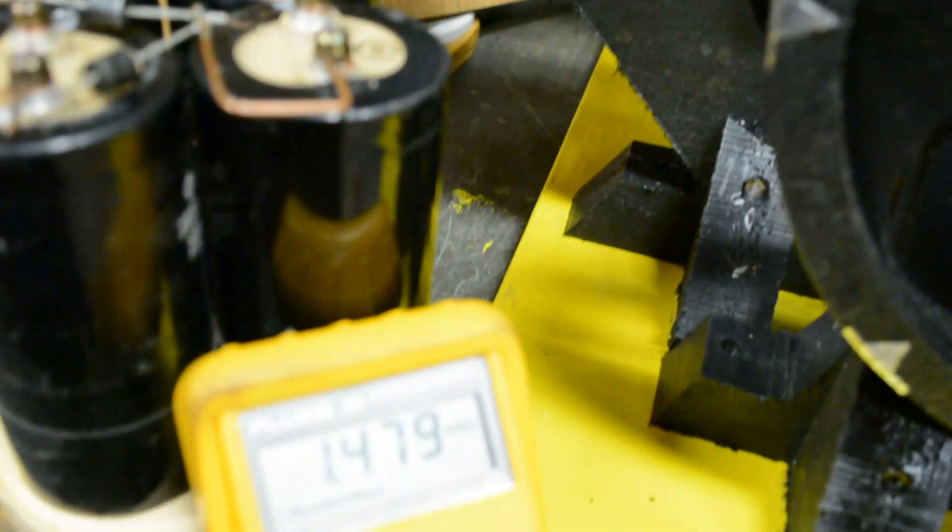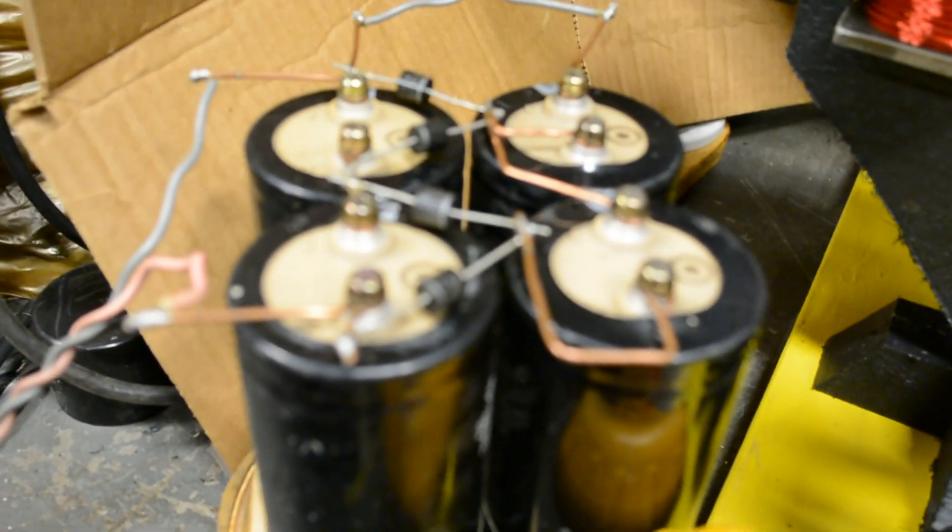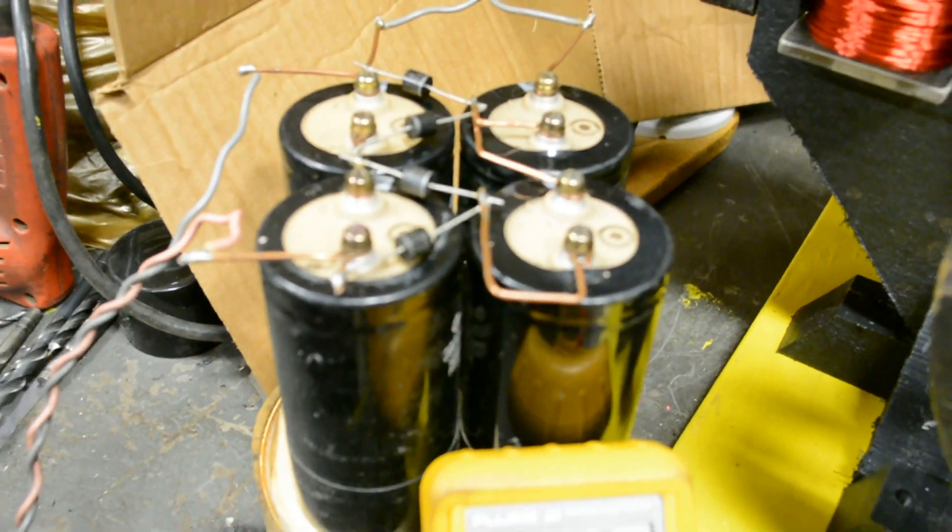And right down here, we have a meter showing right now about one volt across this group of capacitors that are wired as a multiplier.